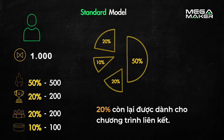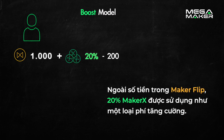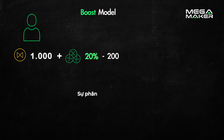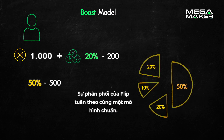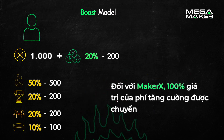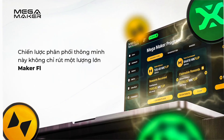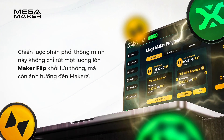In the boost model, in addition to the amount in Maker Flip, 20% of Maker X are used as a boost fee. The distribution of Flip follows the same pattern as the standard model. For the Maker X portion, 100% of the boost fee value goes to burn.